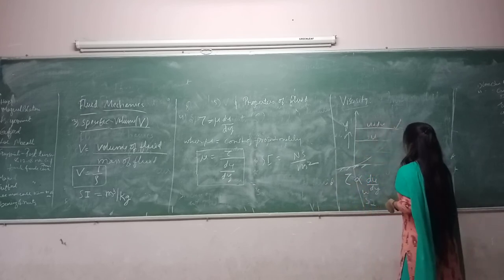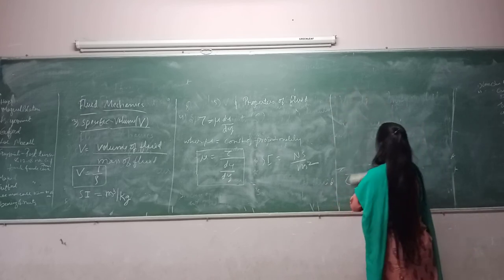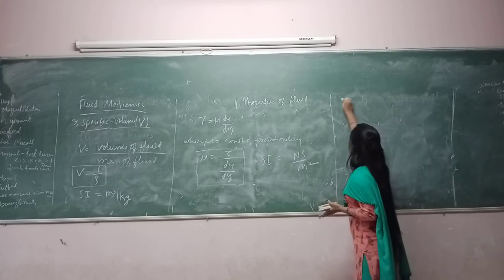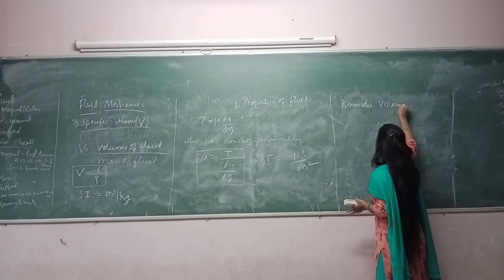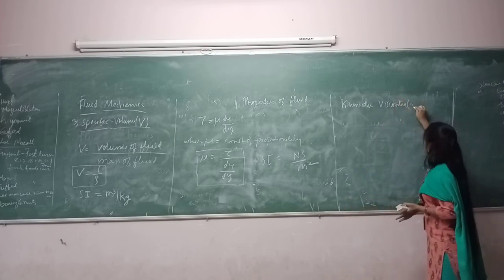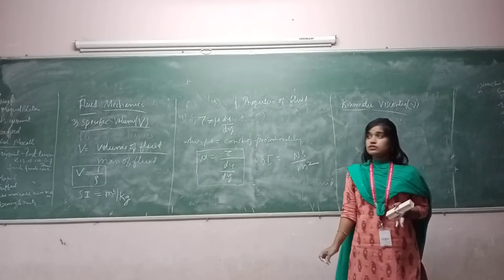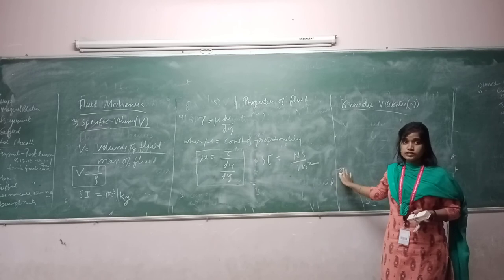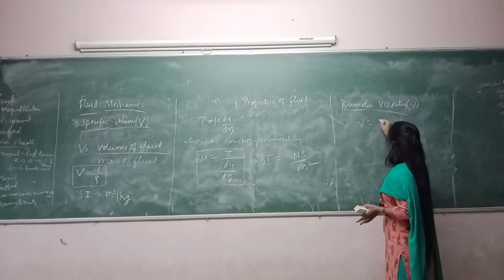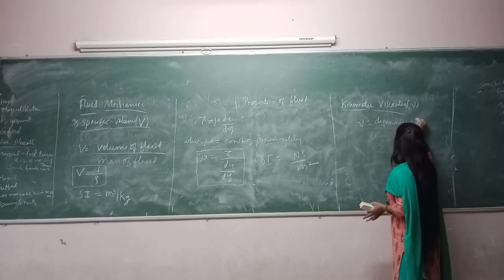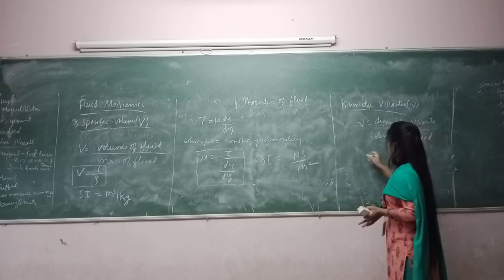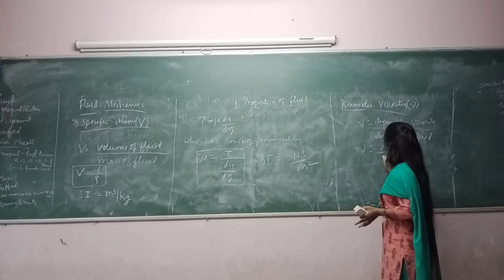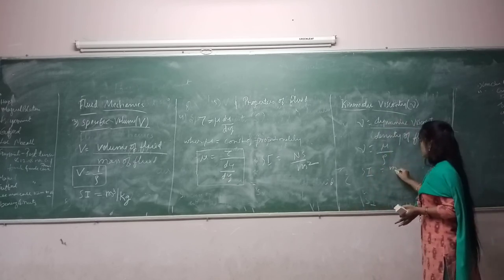The next property is kinematic viscosity, represented by nu. Kinematic viscosity is defined as the ratio of the dynamic viscosity to the density of the fluid. That is nu equals dynamic viscosity divided by density of the fluid. The SI unit of kinematic viscosity is meter squared per second.